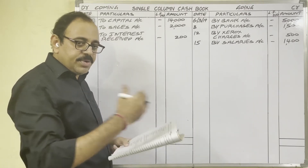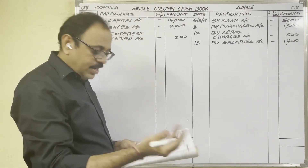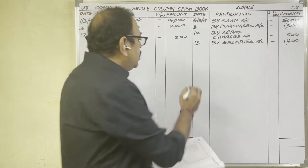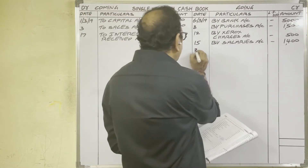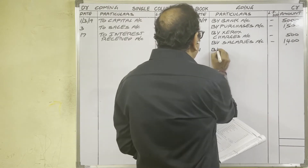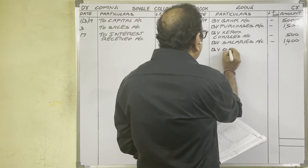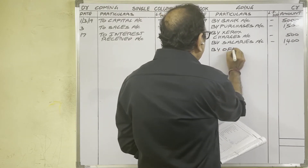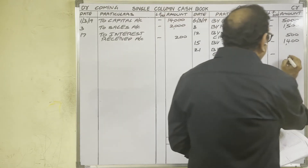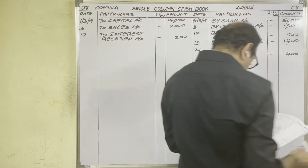21st day: office expenses 400 rupees. This is an expenditure and cash is going out from the firm — credit side. Write: 21st day, By Office Expenses account, 400 rupees.